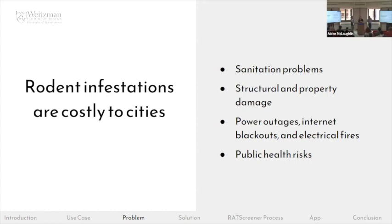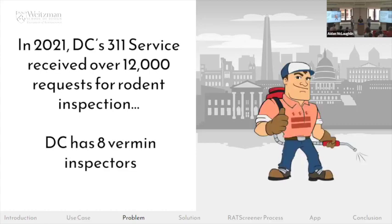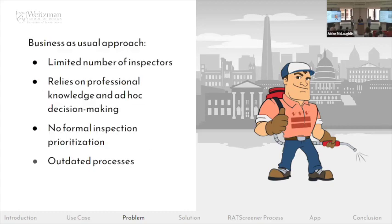Rats are most commonly associated with sanitation problems, but they can also cause structural damage by burrowing in streets and buildings, leading to the loss of businesses, homes, and other community assets. They can cause power outages, internet blackouts, and fires by gnawing on gas lines and wires. Of course, they also pose a risk to public health as they can contaminate food and carry pathogens.